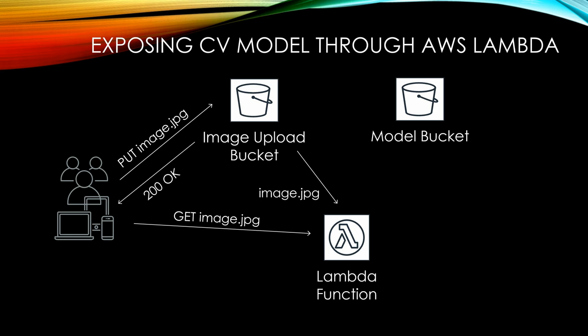Besides the image, the machine learning model will also be downloaded from the model bucket during cold start, so the function will be ready to obtain predictions. Once the predictions are retrieved from the model, our Lambda will return them in JSON through the standard HTTP response.